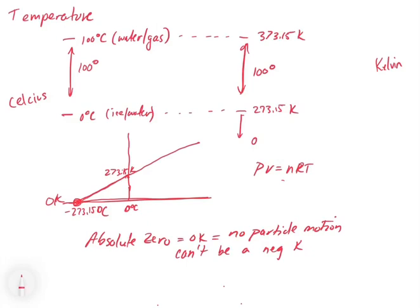So how do we convert? So the conversion is actually pretty simple. The temperature in Kelvin is going to equal the temperature in degrees Celsius plus 273.15.